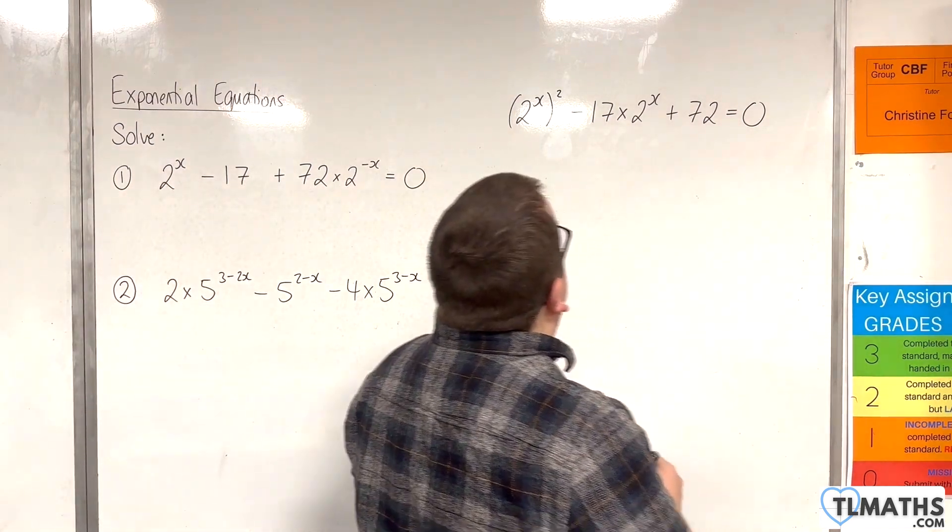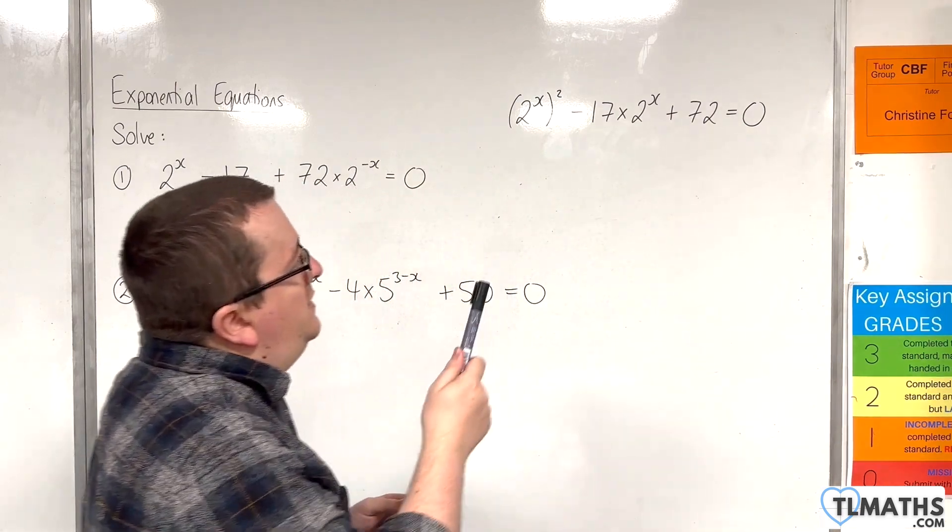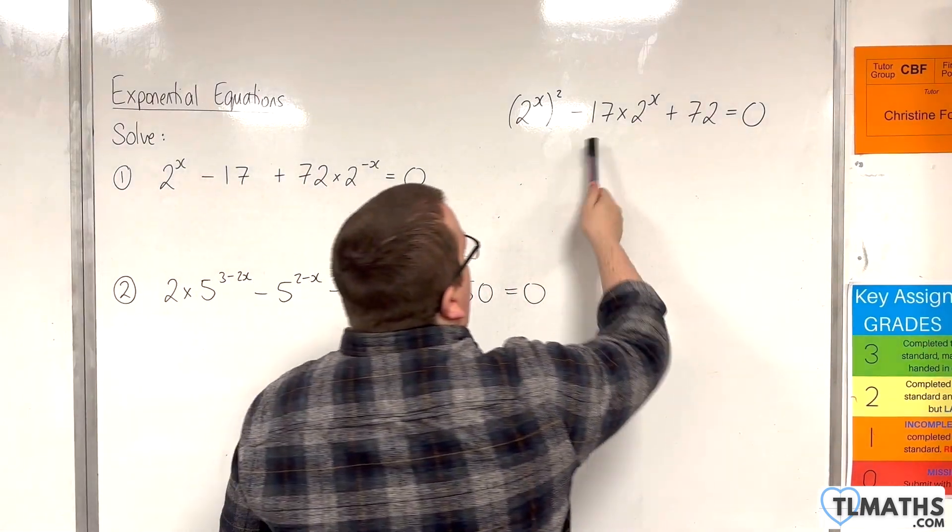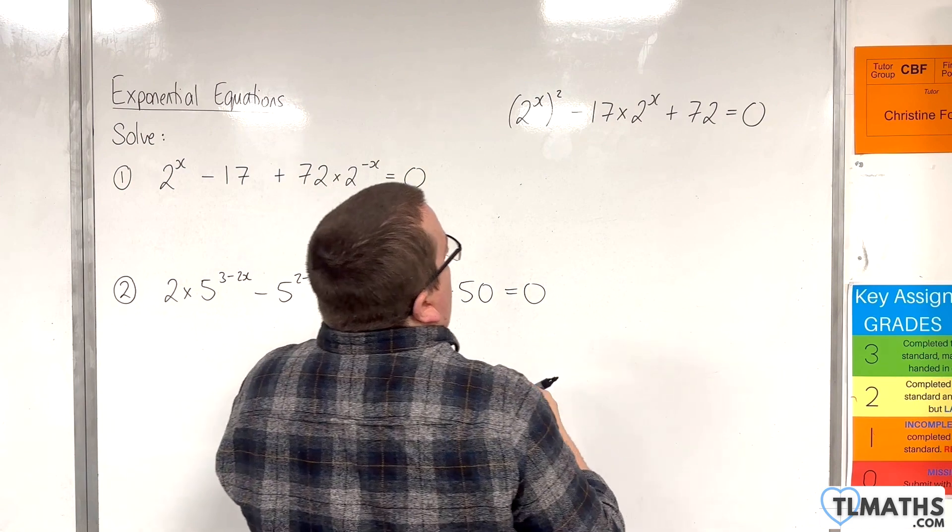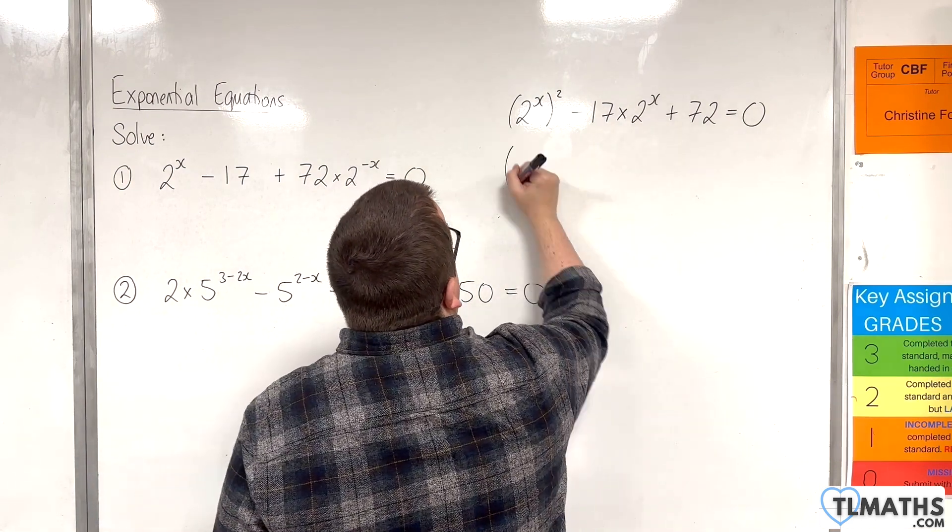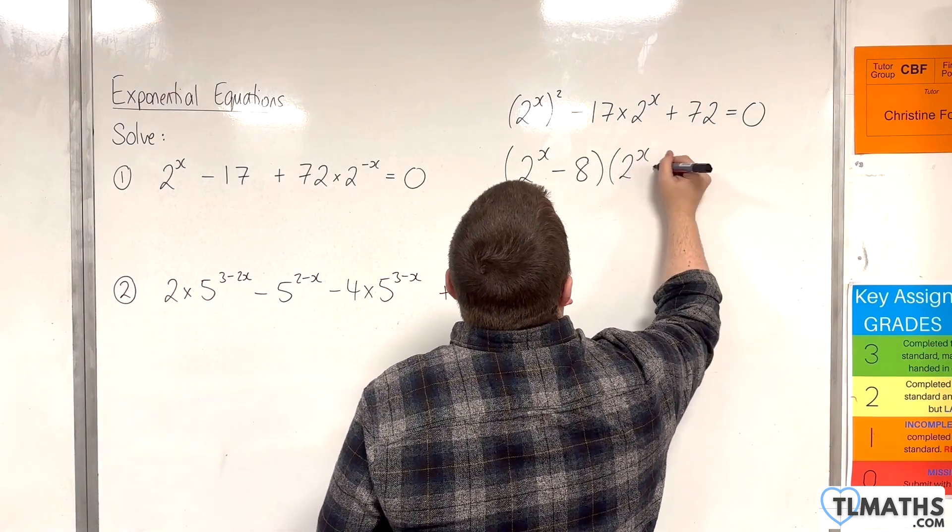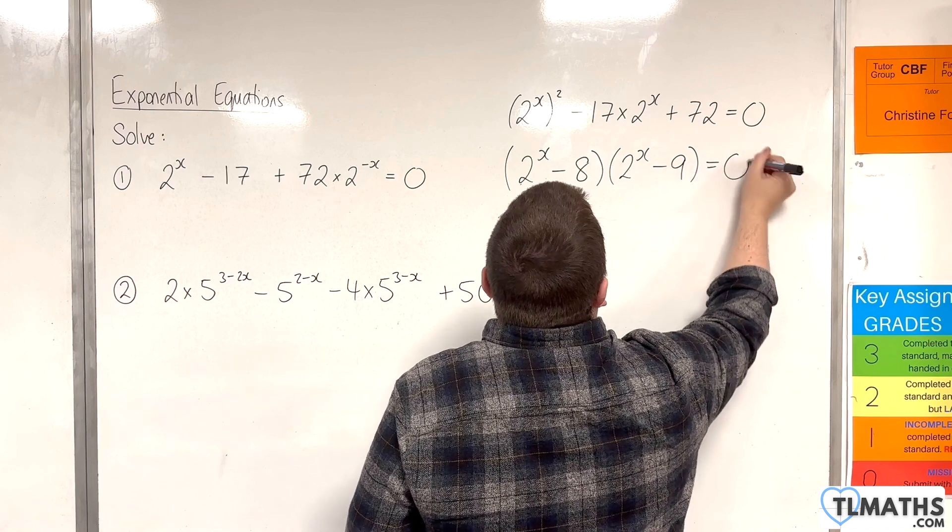OK? So, two numbers that multiply together to make 72, but add together to make minus 17. So, that would be 8 and 9, wouldn't it? So, 2^x - 8, and 2^x - 9 is equal to 0.